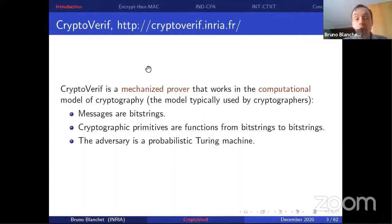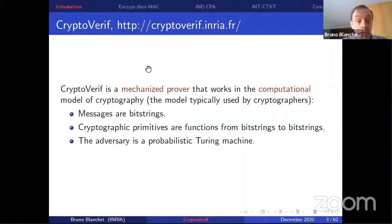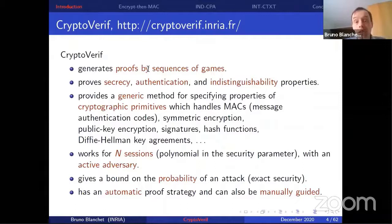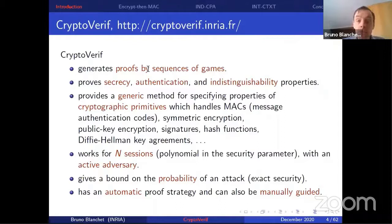CryptoVerif is a mechanized prover that works in the computational model of cryptography — the model typically used by cryptographers, and not the same as Tamarin, which works in the symbolic model. In the computational model, messages are bitstrings, cryptographic primitives are functions from bitstrings to bitstrings, and the adversary can be any probabilistic Turing machine. CryptoVerif generates proofs by sequences of games. It's a prover — it doesn't find attacks. For finding attacks, you can use Tamarin or ProVerif.